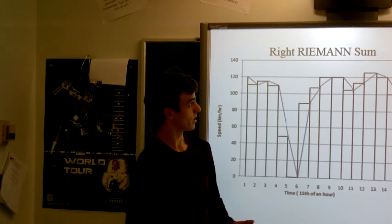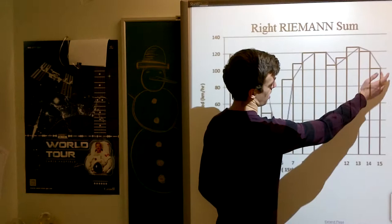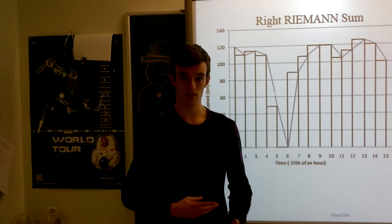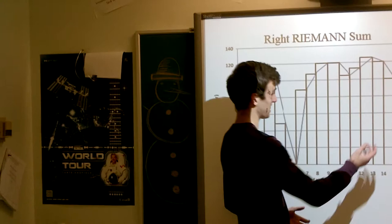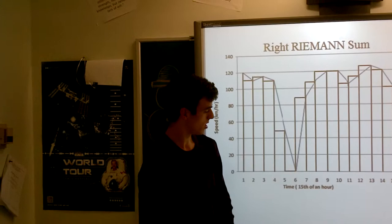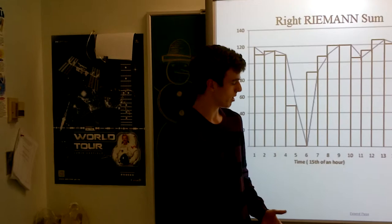For the Right Riemann sum, you want to start at the right-most point of the graph. Right here, I was traveling 100 kilometers an hour, and again, that would be over four minutes. So the total distance traveled there is 6.66 kilometers. You then repeat the same process for every single one of the rectangles.